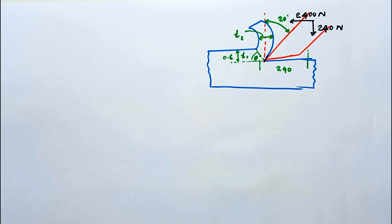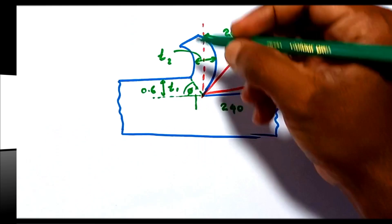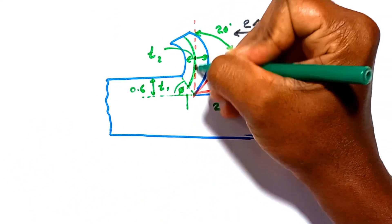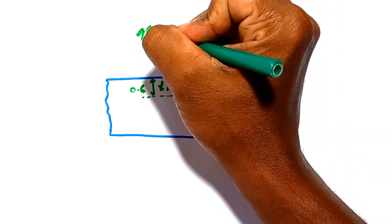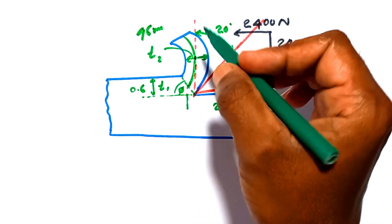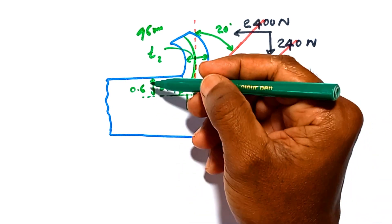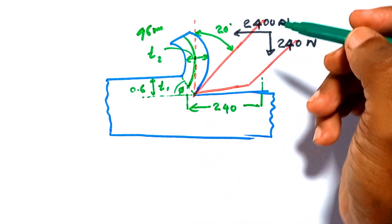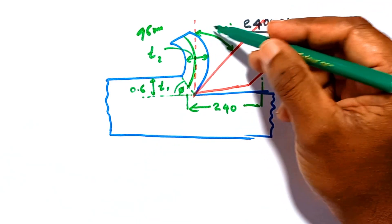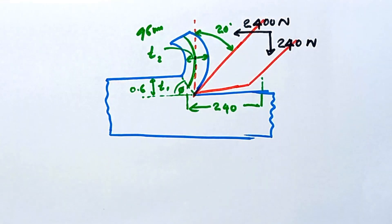Let's see how to solve this problem. Looking at the figure: the obtained chip length is 96 mm, the uncut chip length before it is removed from the surface is 240 mm, depth of cut is 0.6 mm, rake angle is 20 degrees, cutting force along the cutting direction is 2400 newton, and thrust force is 240 newton.